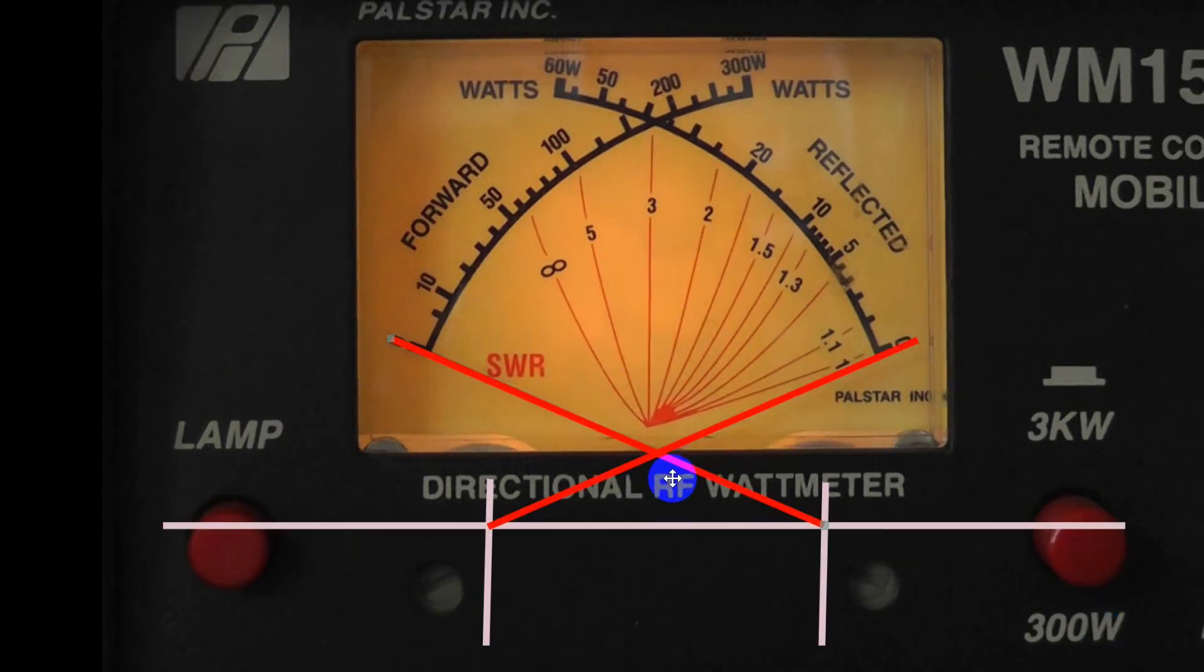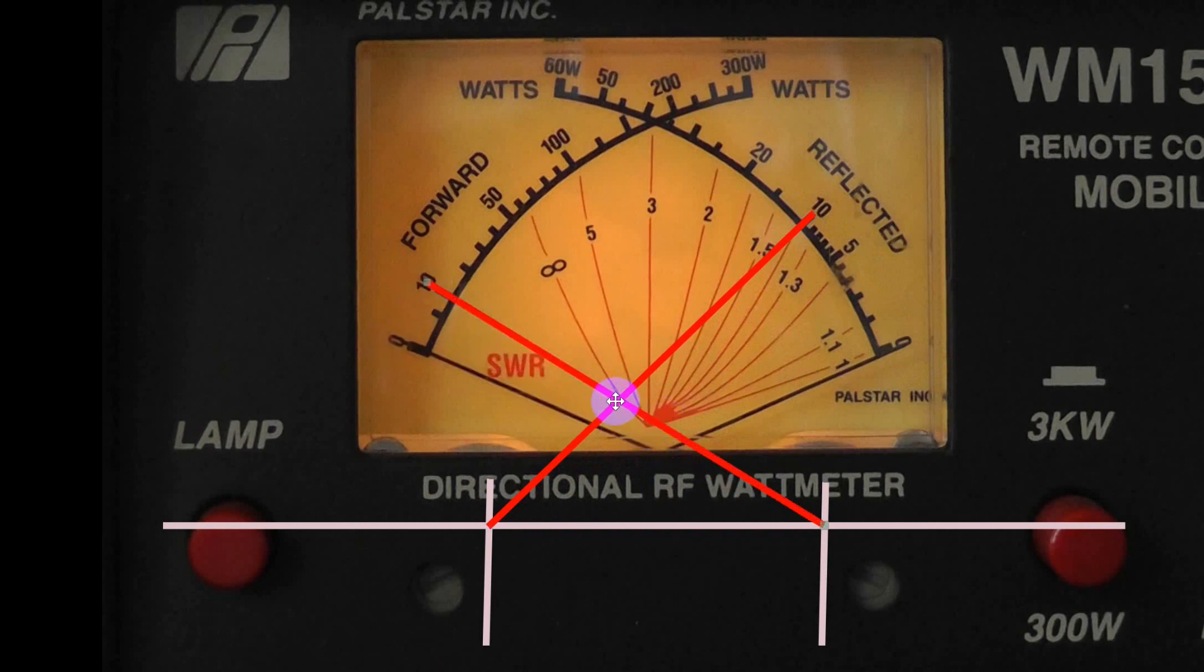What I've drawn is some lines here just to show the effects of how that thing would work. Let's take this one right here. This is the reflected power and we'll just put it at 10 watts reflected power. Now we take the forward power one and if we put this up at 10 watts, look where they cross: infinite SWR.